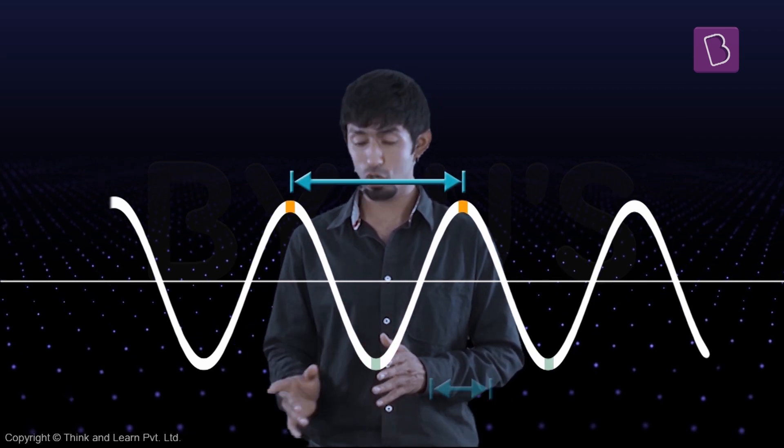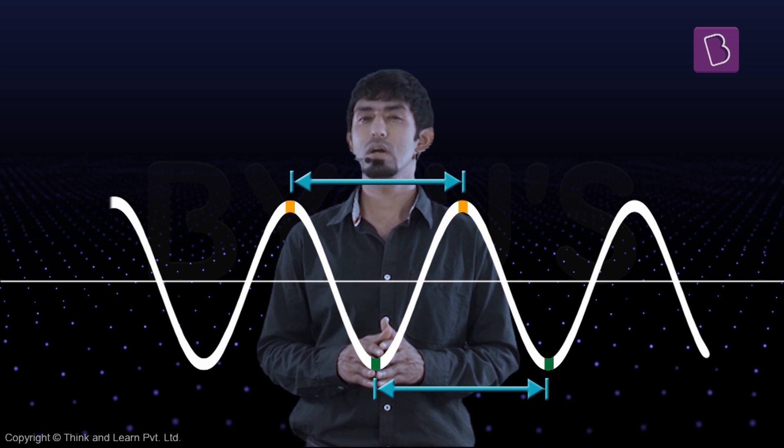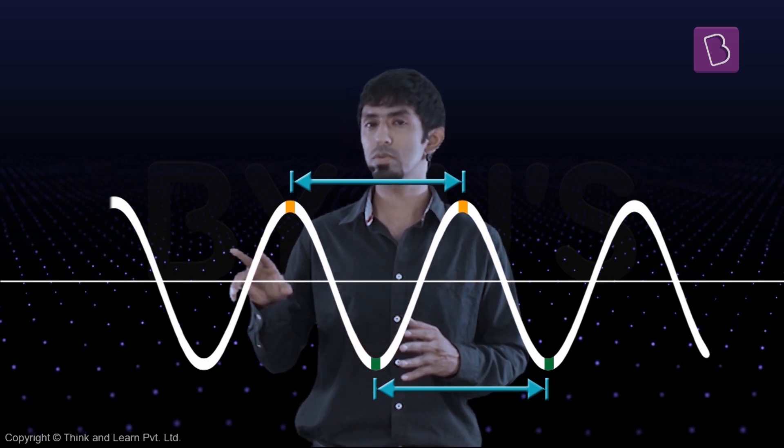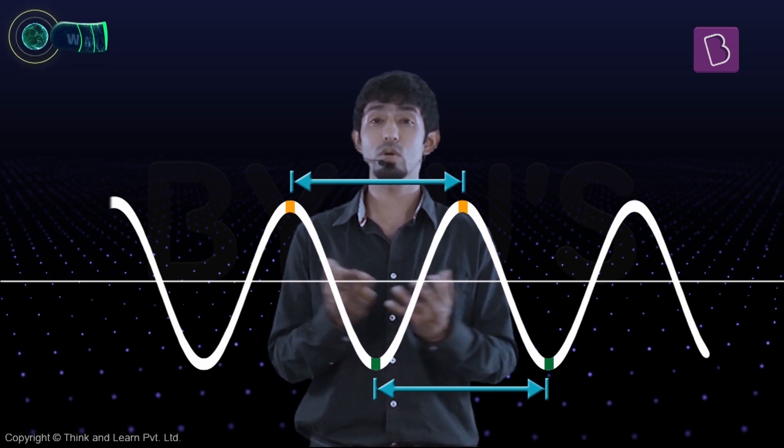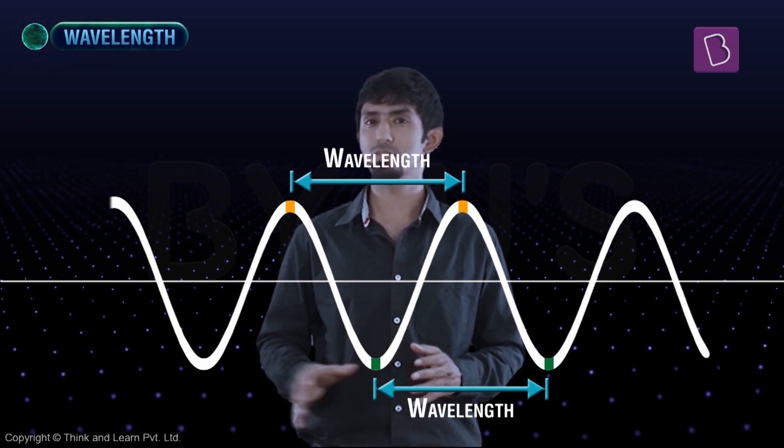We're going to take that wave, keep it in front of us, and define certain quantities. The first one being the distance between two crests or two troughs. You already know they're going to be equal, right? The distance between two crests and two troughs is going to be equal, and that particular distance is what we're going to call a wavelength. So it's the length of this wave.